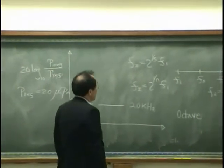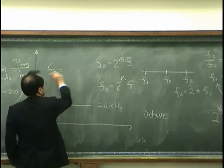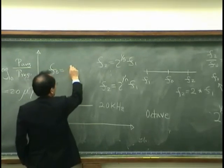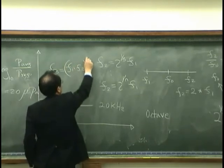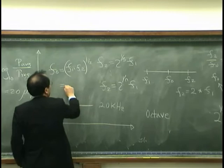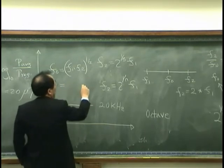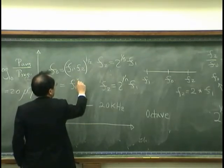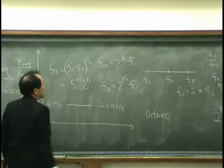For the one-third octave band case, the center frequency is f1 multiplied by f2 to the one-half power, and f2 is one-third, so f1 squared to one-third. What is it?